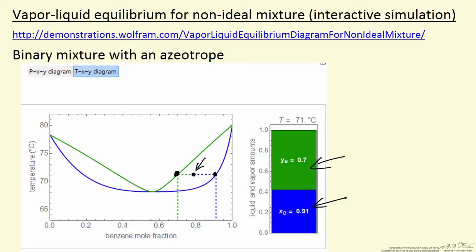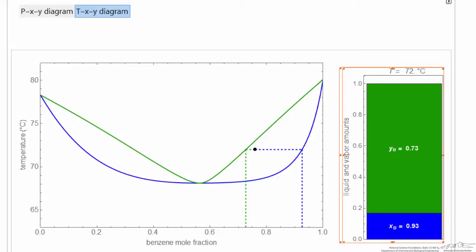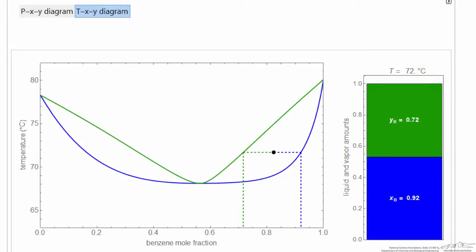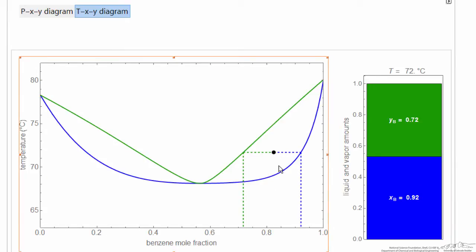And now what I'm going to do is show you the simulation. So here's the interactive simulation. What you're able to do with your mouse is move this point, and you can see the bar graph displays the relative amounts of liquid and vapor.